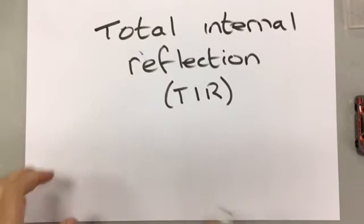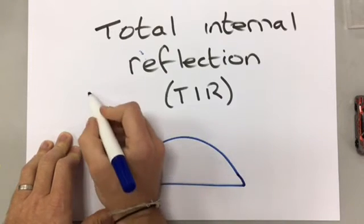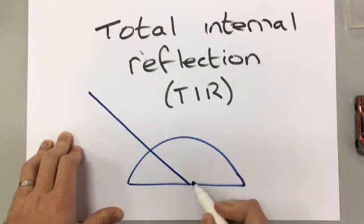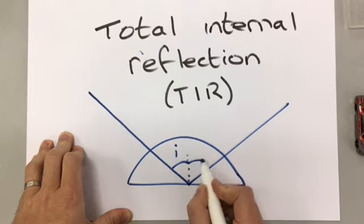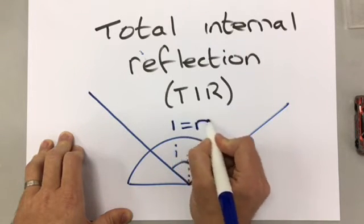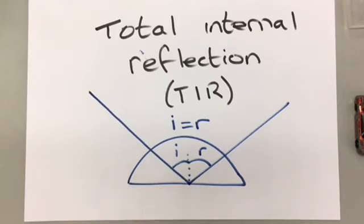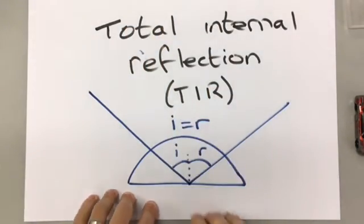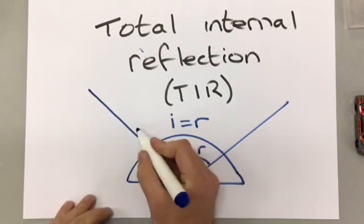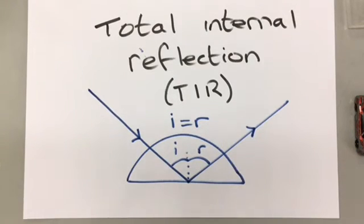We can draw this in a diagram. We have light coming in and then it totally internally reflects off here. Because we know all about reflection, we know that the angle of incidence is equal to the angle of reflection. This only happens when the angle of incidence is big enough. If the light shines directly through, then it just refracts out. So only if the angle of incidence is big enough does total internal reflection happen.